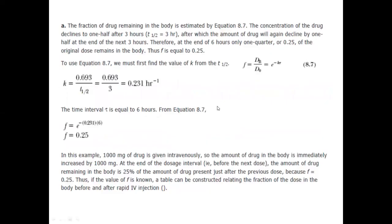Consider an example: the concentration of the drug declines to one-half after every three hours. After six hours, it declines to one-quarter, which is 0.25. Here we are giving multiple doses every six hours, so the next dose is given after six hours, meaning F after six hours is 0.25.